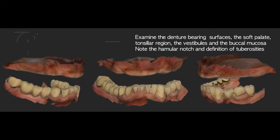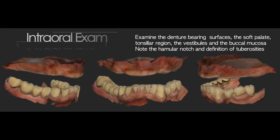For the maxillary region, examine the denture-bearing surfaces, the soft palate, the tonsillar region, the vestibules, and the buccal mucosa. Please note that the hamular notch and the definition of the tuberosity must be observed and their location identified.